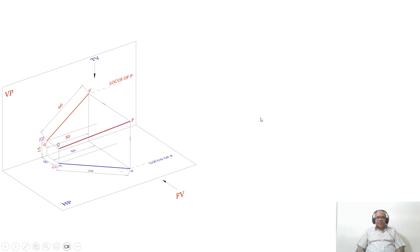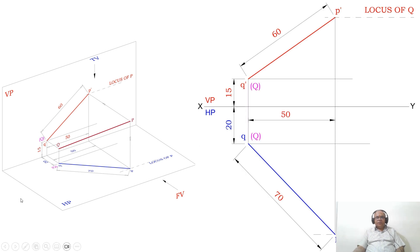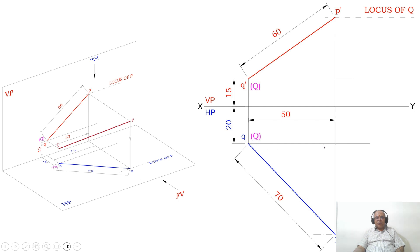To get this on the drawing, first we draw the XY line and mark VP and HP. From the XY line, you measure 15 mm above HP — that is this distance that will be seen in the vertical plane, which is above the XY line. From this point, you measure 15 mm and draw your horizontal line. From the same point, you measure the distance in front of VP — that is on HP. When HP is rotated, HP will come down. So from here, you measure 20 mm and draw your horizontal line.